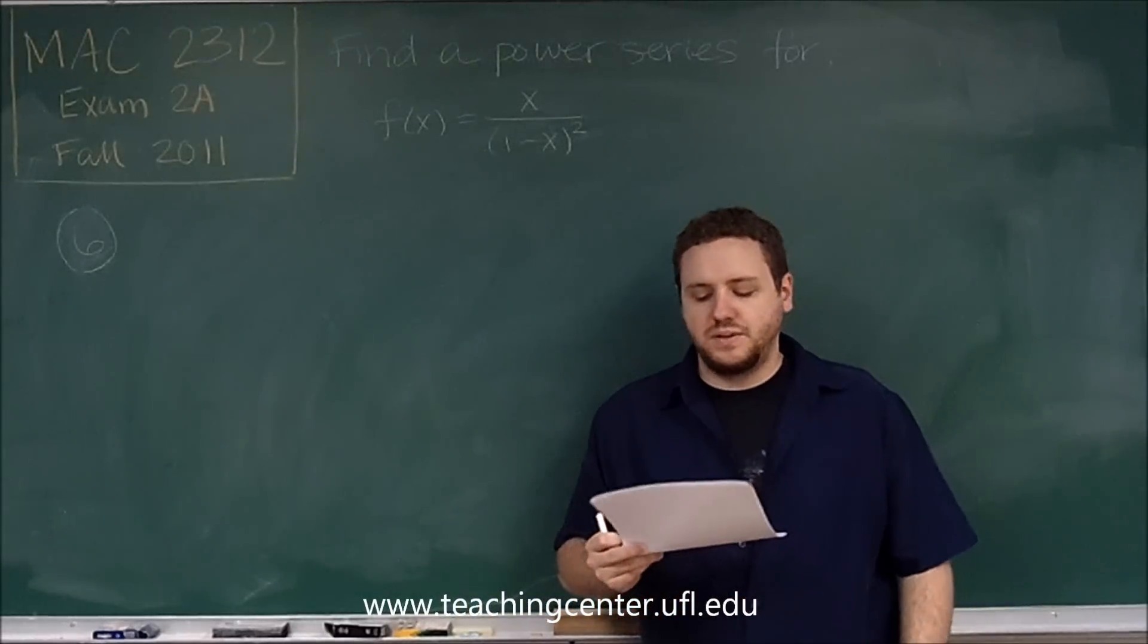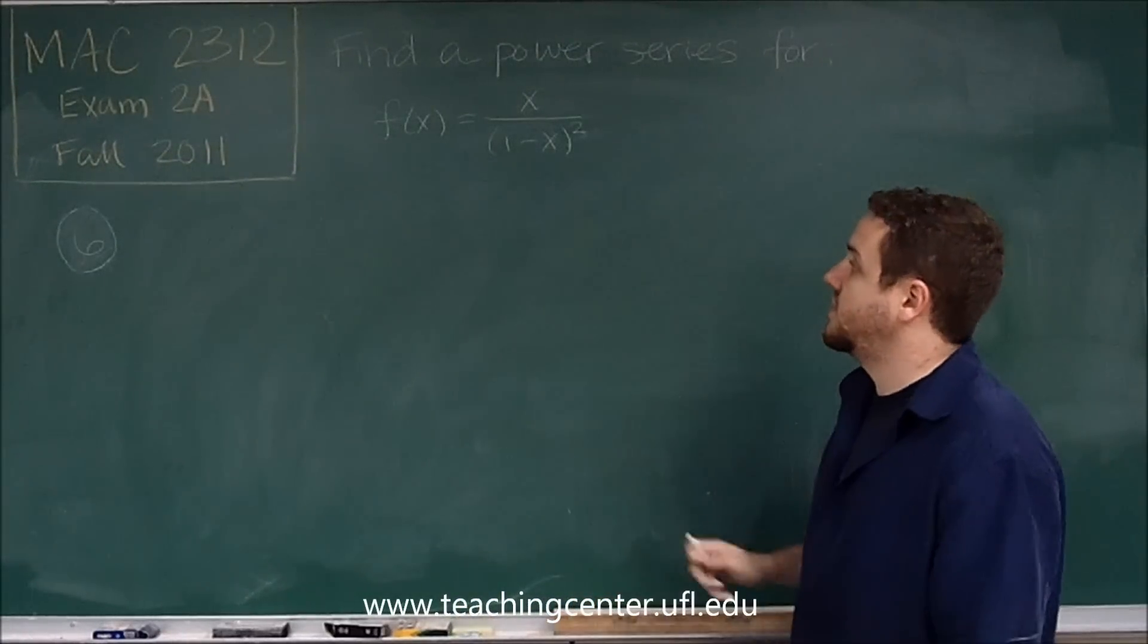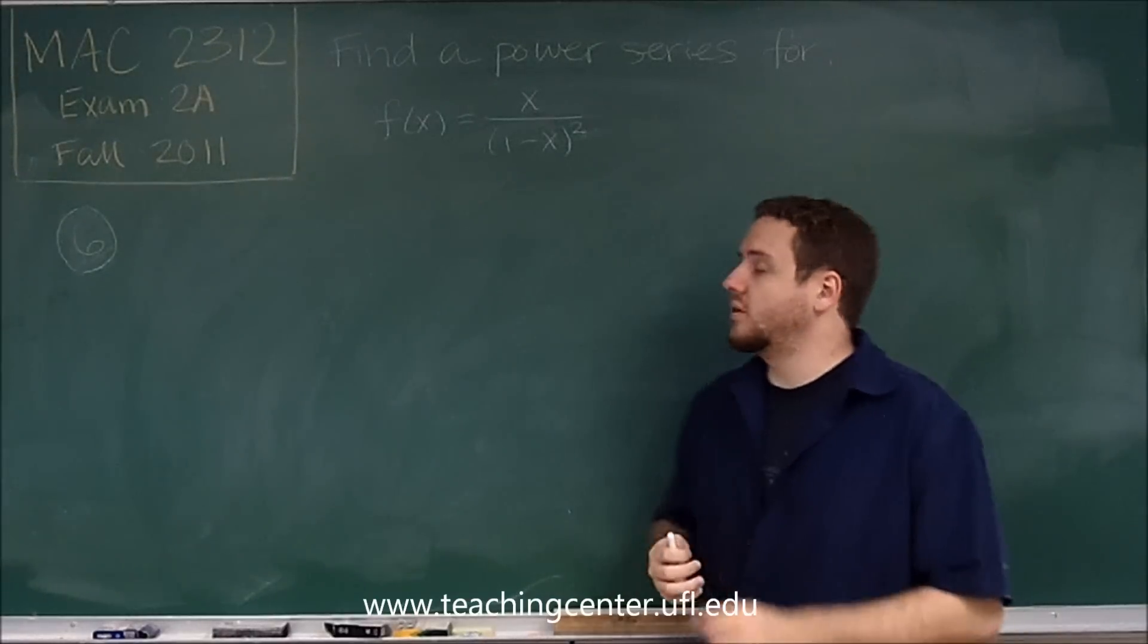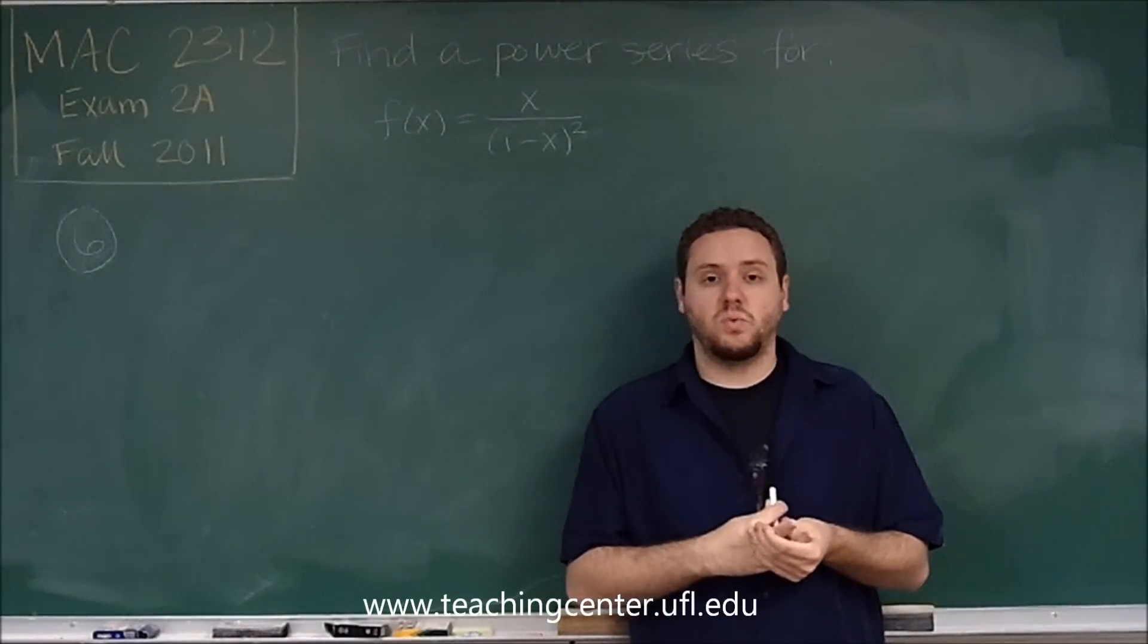Alright, for number 6 we need to find a power series representation for the function f(x) equals x over quantity 1 minus x squared.